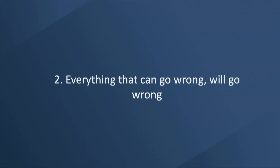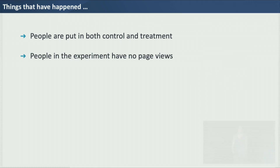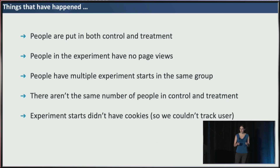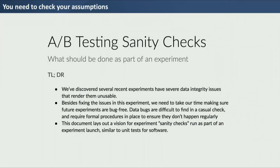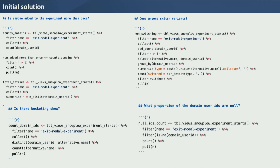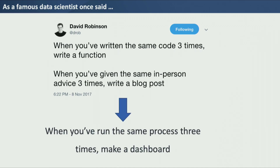My second lesson is that everything that can go wrong will go wrong. A non-exhaustive list of things that have happened: people are put in both control and treatment — that should not happen. People in the experiment have no page views — mysterious users with only backend events. People have multiple experiment starts in the same group. There aren't the same number of people in control versus treatment. Experiment starts didn't have cookies, so we couldn't track the user or link that start to any other event. We realized we really needed to check our assumptions. My initial solution was again lengthy, repetitive code copied between experiment files. But as a famous data scientist once said, when you've written the same code three times, write a function. When you've given the same in-person advice three times, write a blog post. And I'll add: when you've run the same process three times, make a dashboard.